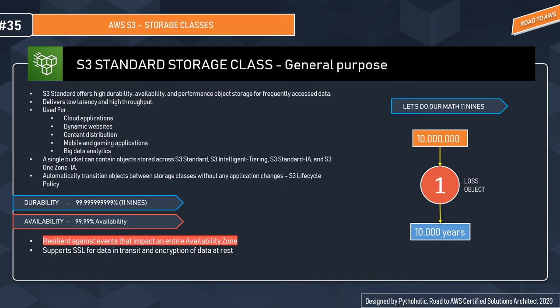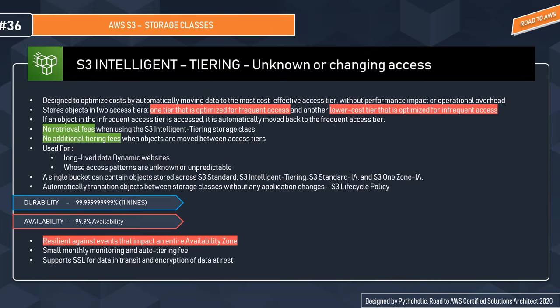S3 Intelligent Tiering is designed to optimize cost by automatically moving data to the most cost-effective access tier without performance impact or operational overhead. Unlike standard, Intelligent Tiering stores objects in two access tiers: one optimized for frequent access and a lower-cost tier optimized for infrequent access.